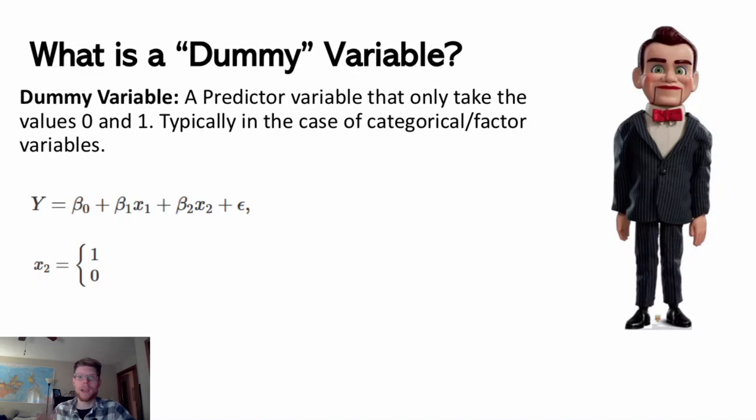So let's start with a simple case though. We have a binary variable, it takes two different categories, and we're going to assign one to be a one, one to be a zero.